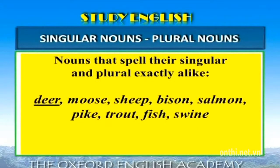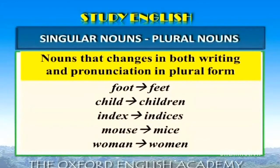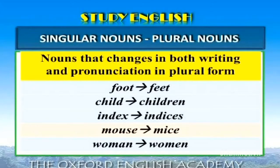Thứ ba, một số danh từ không kết thúc bằng -s và không thay đổi dạng thức ở cả số ít và số nhiều. Ví dụ: Deer, Moose, Sheep, Bison, Salmon, Pike, Trout, Fish, Swine. Một số danh từ thay đổi cách viết và cách đọc khi chuyển từ số ít sang số nhiều. Ví dụ: Foot thành Feet, Child thành Children, Index thành Indexes, Mouse thành Mice, Woman thành Women.